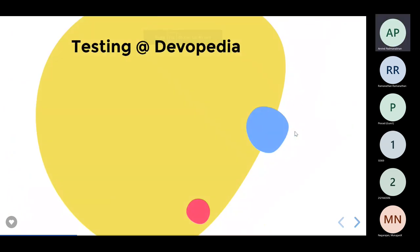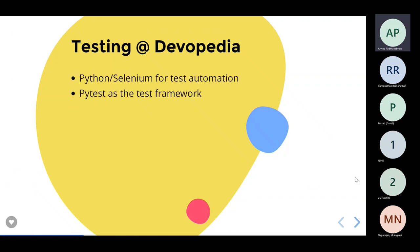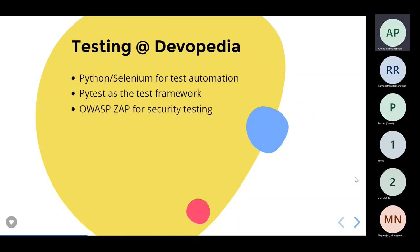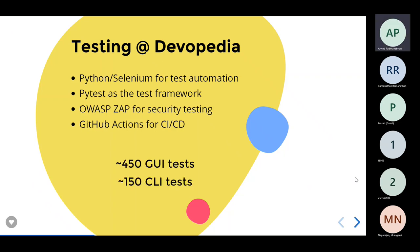What do we do at Devopedia for testing? We use Python Selenium for test automation, PyTest as the test framework, OWASP ZAP for security testing, and GitHub Actions for CI/CD. We have roughly 450 GUI tests and about 150 CLI tests.